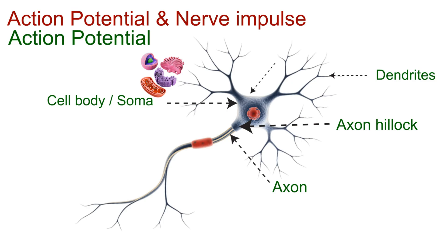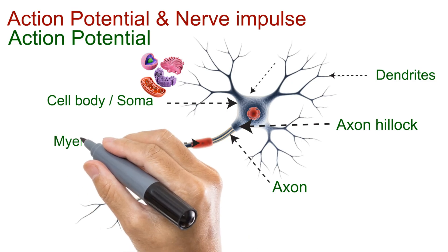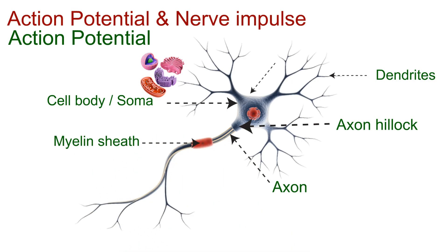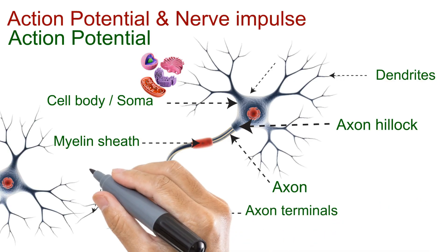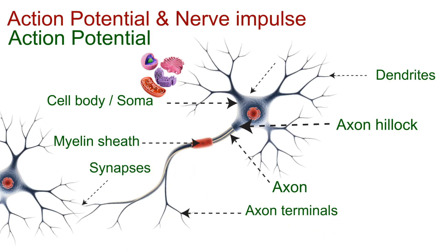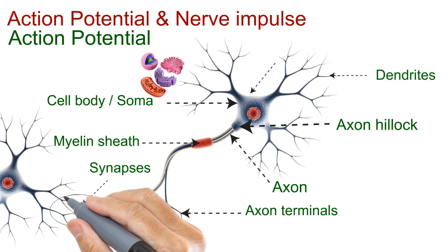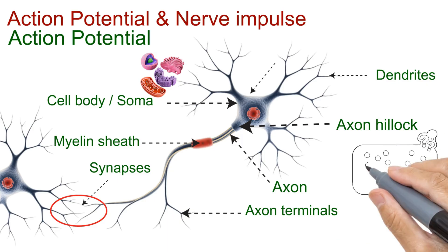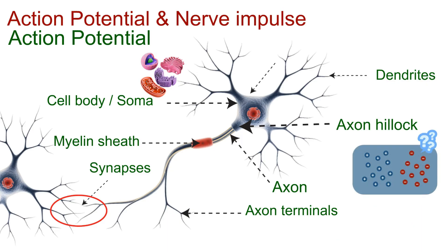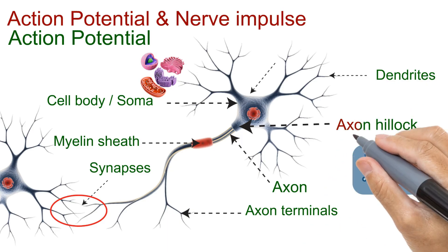The axon is wrapped by the myelin sheath, a fatty covering. At the far end of the axon are the axon terminals, which form synapses with the dendrites of the next neuron. Those synaptic connections are how one neuron passes information to another. But first, we need to see how the electrical signal is born at the membrane — that begins at the axon hillock.